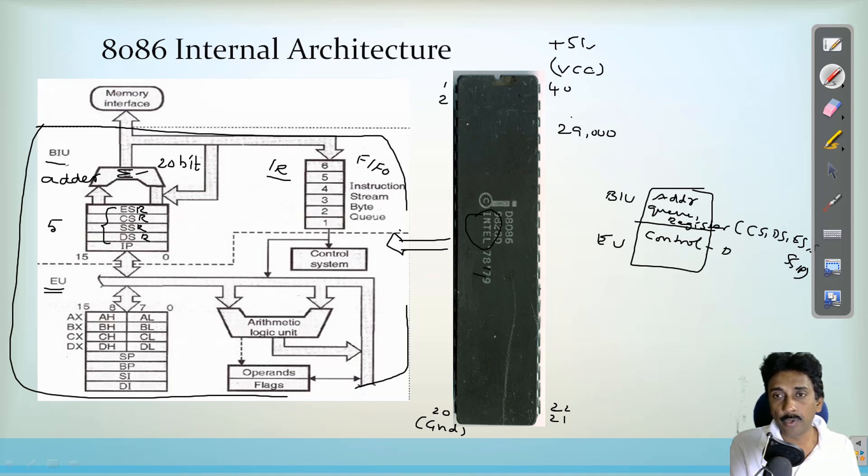The function of this decoder unit is that the number of instructions can be translated into sequence of steps. So the instructions are translated into sequence of steps. So then the decoder will decide what is the action to be taken for executing the instruction. So after decoding will be done, then it is sent to the execution unit.